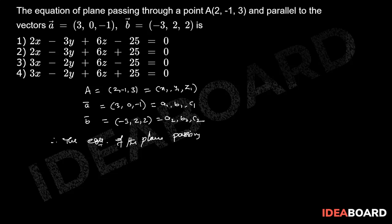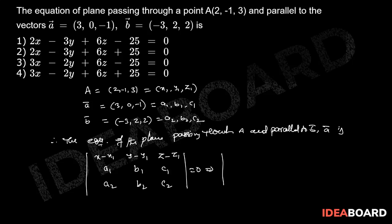Therefore the equation of the plane passing through A and parallel to b̅, a̅ is determinant of x minus x₁, y minus y₁, z minus z₁, a₁, b₁, c₁, a₂, b₂, c₂ equals 0.